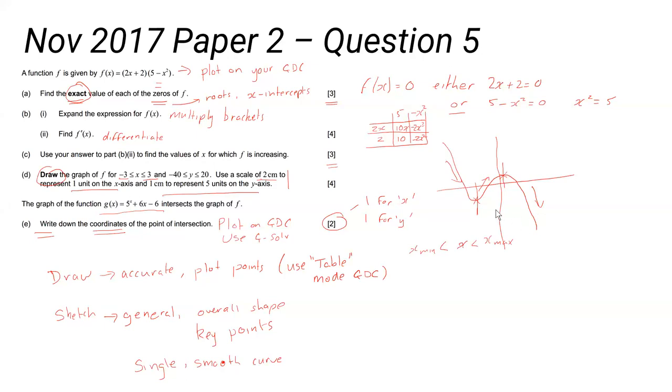We want to know where it's increasing. Well, it's decreasing here, gets to a minimum point, then it starts increasing, gets to a maximum point, and then it starts decreasing. So the interval where it's increasing is between the minimum point and the maximum point. You need to find those coordinates x min and x max and write it as an inequality.